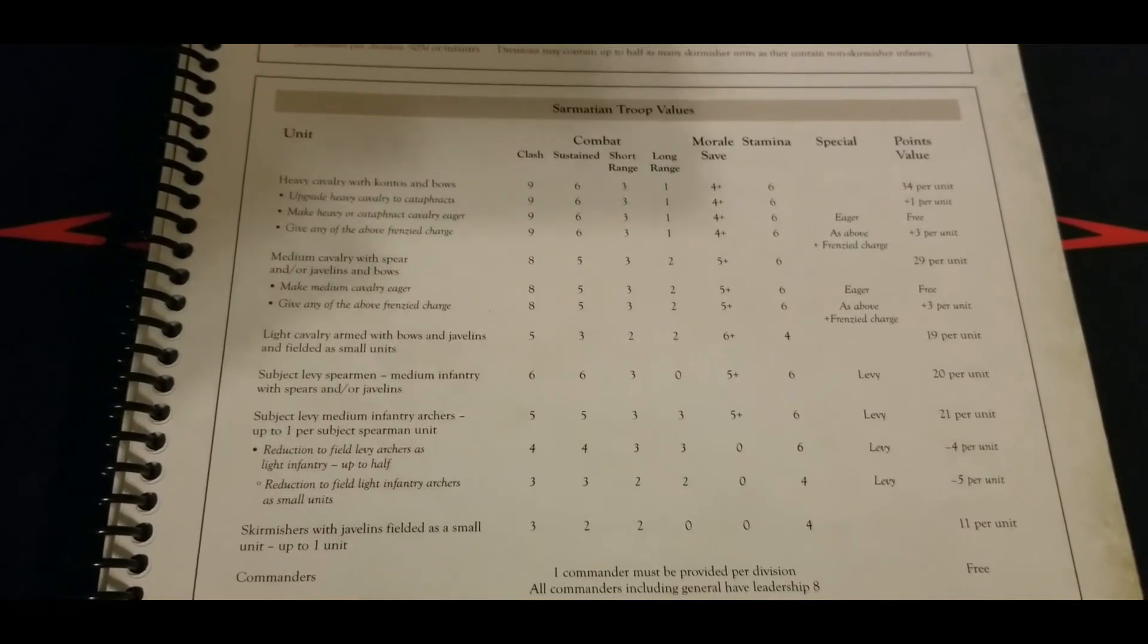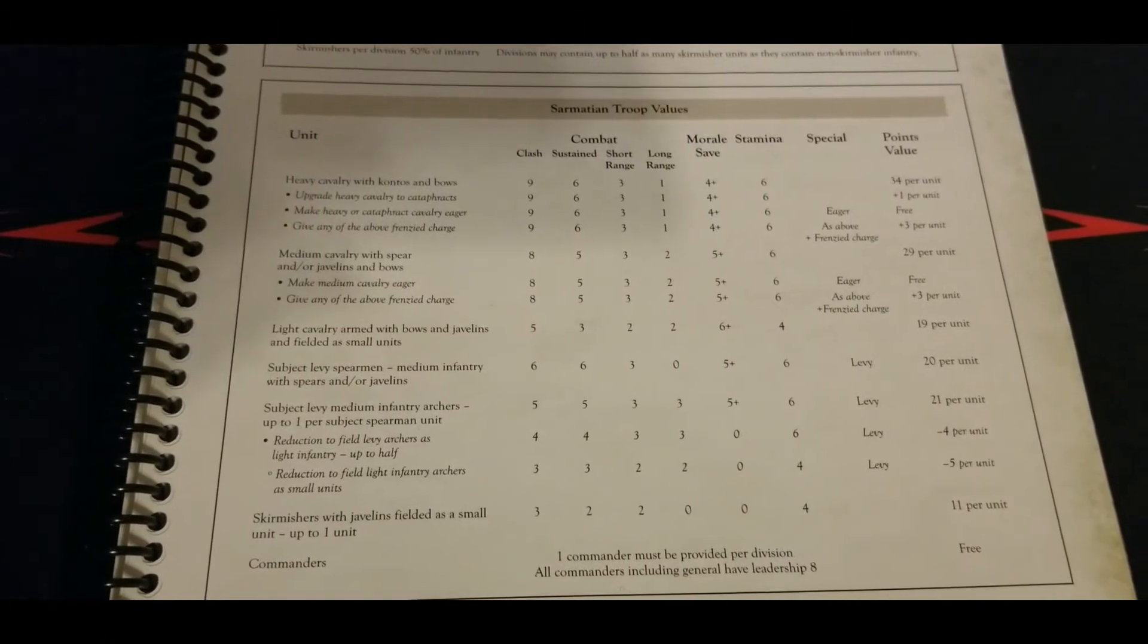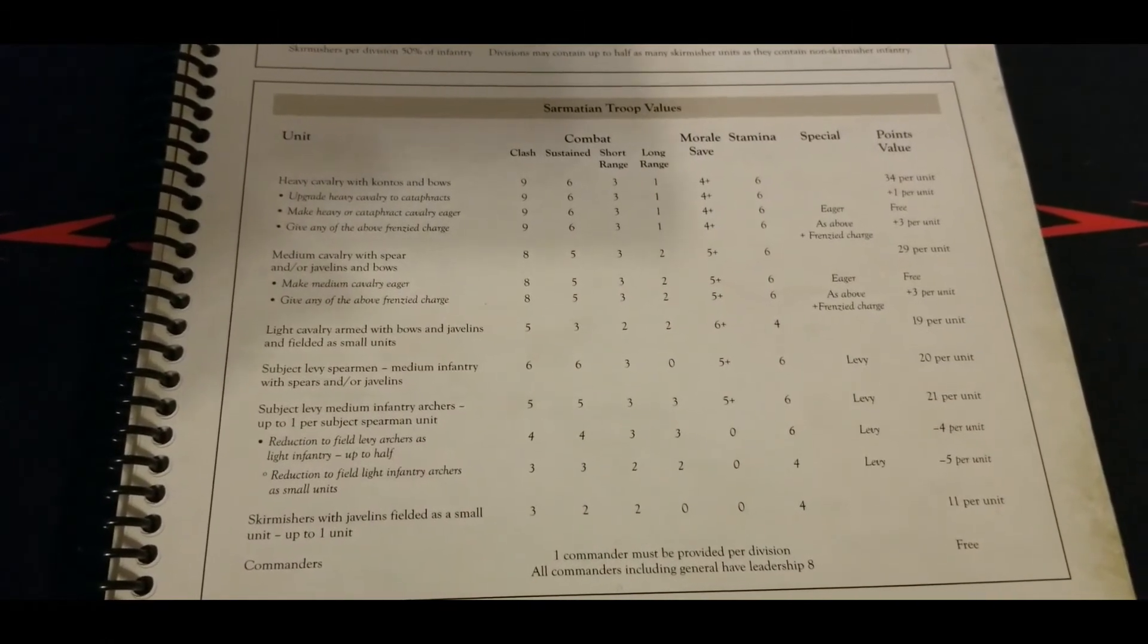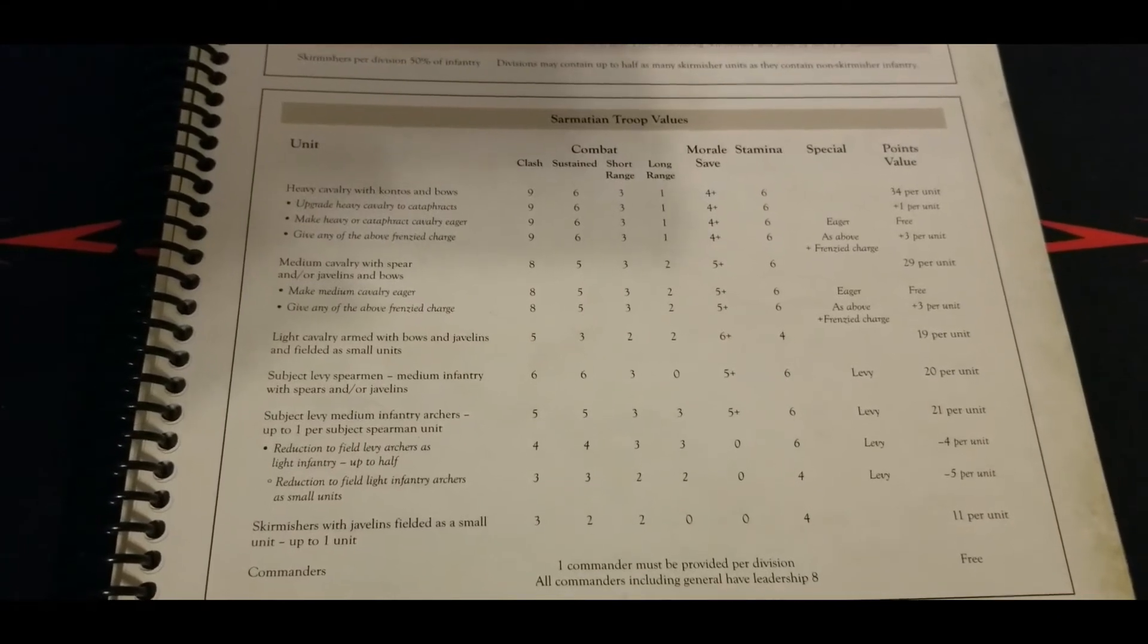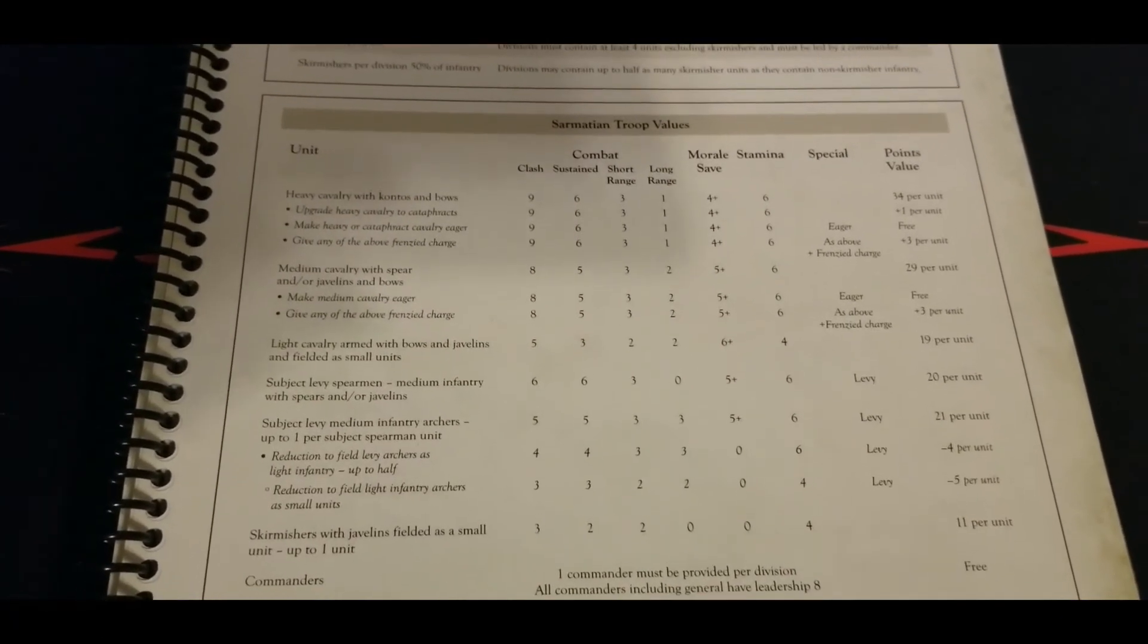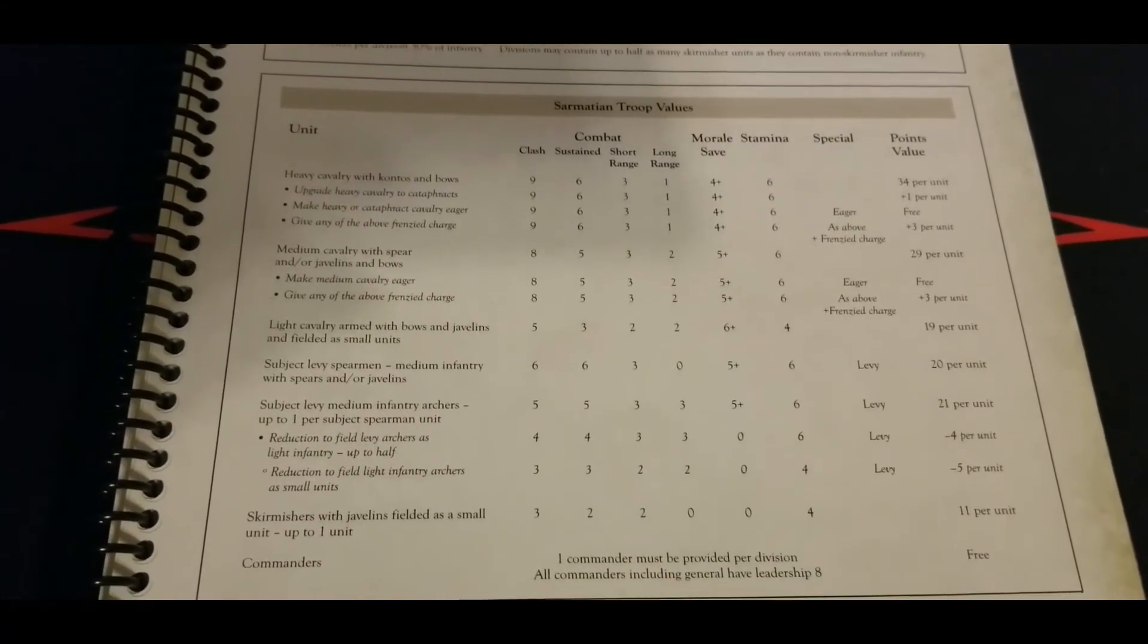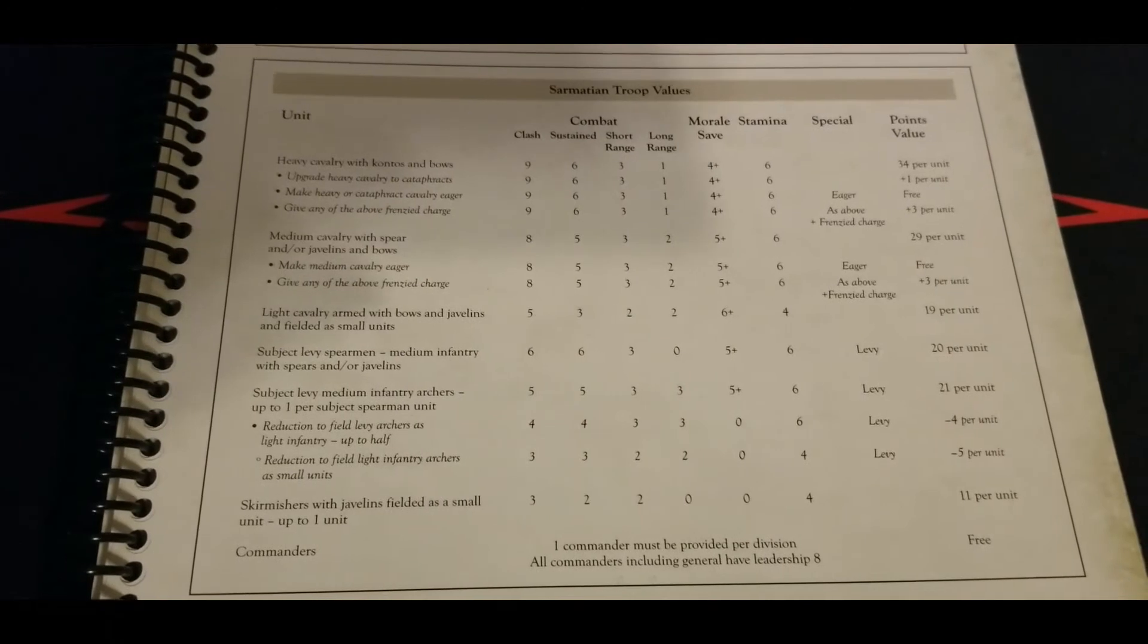You could also field light infantry archers as small units, basically a double reduction—nine point reduction. For 12 points total, having small unit archers still throwing twos might not be bad, depending on game size and space needs.